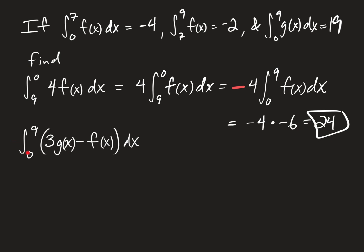So the three would come out to the front, the integral from zero to nine of g of x dx minus, coming from that sign there, the integral from zero to nine of f of x dx. And that is the sum or difference rule, in this case difference rule, that allows you to split up one big integration over many functions to smaller integrations focusing on each function individually.